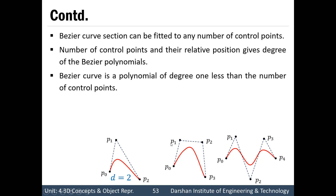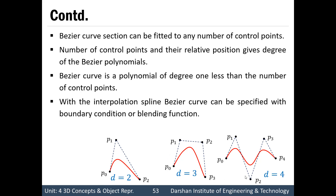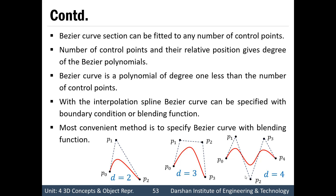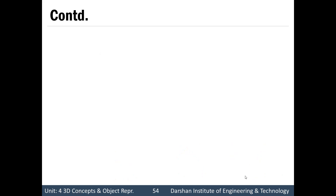For a 4 control point Bezier Curve, the degree is 4 minus 1, which is 3. And here a degree of 5 control points will be 4. With interpolation splines, a Bezier Curve can be specified with boundary conditions or a blending function. The most convenient method is to specify a Bezier Curve with the blending function.